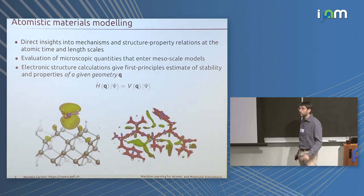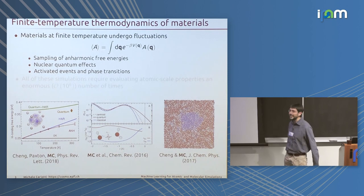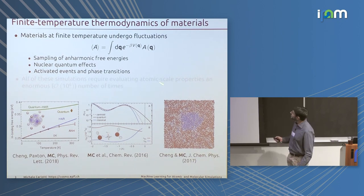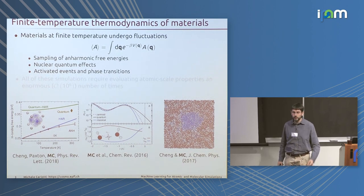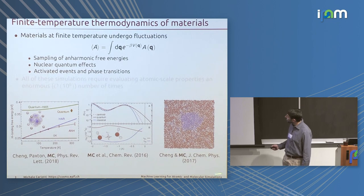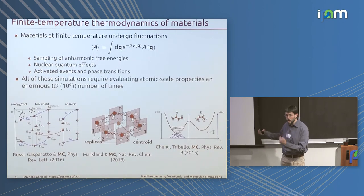This gives you only solutions for one configuration of your system. In my personal scientific education, I have always been interested in studying the properties of materials at finite temperature or including quantum mechanical fluctuations of the nuclei. In all of these cases, what you have to do is not just compute the properties of one configuration, but to sample multiple configurations consistent with the thermodynamic boundary conditions.